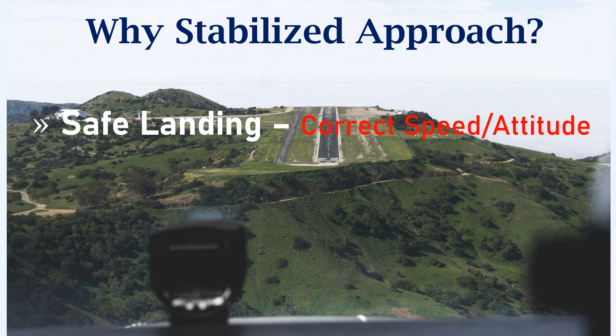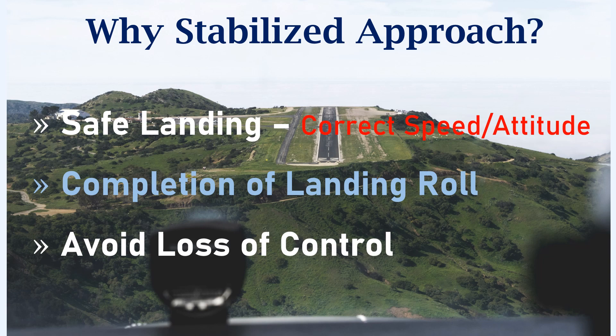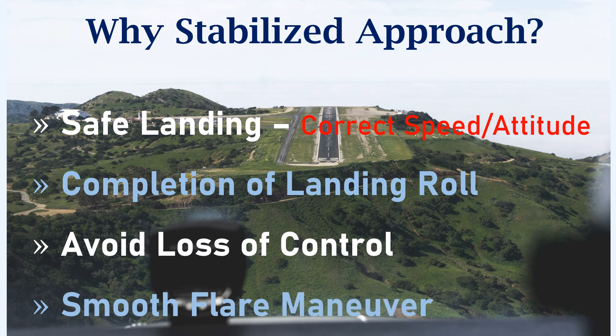A stabilized approach also ensures the completion of the landing roll within the available runway length or the available landing distance. With a stabilized approach, pilots can avoid a loss of control of the aircraft during approach, which is more critical if there is any terrain surrounding the runway. And finally, a smooth flare maneuver can be initiated by the pilots if the approach is stabilized.